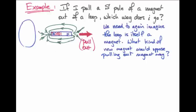As before, we need to envision that the loop of wire is now going to act like a magnet. And this new magnet, it's an imaginary magnet, but this magnet will try to oppose the motion that we are introducing, namely pulling the south pole out.